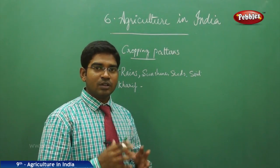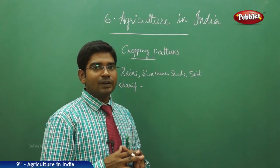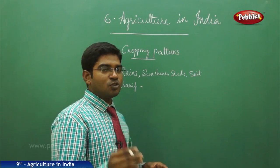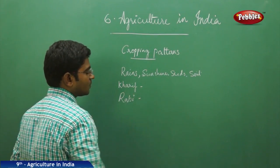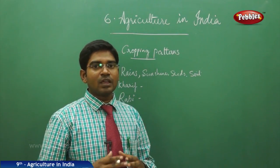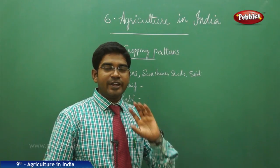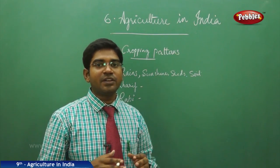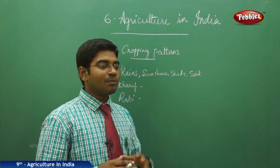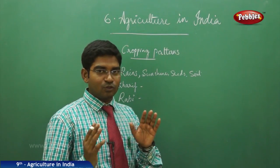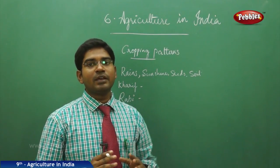Paddy is a staple food especially for South Indians, while North Indians consume it less, preferring wheat more. After Kharif, the next most important season is Rabi. During Kharif, the place needs temperatures above 27 degrees Celsius for paddy to be produced. When it comes to Rabi, temperatures are more moderate, as the season spans November to April.